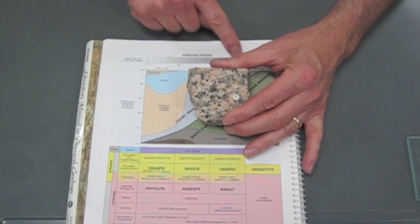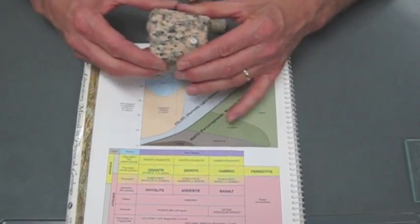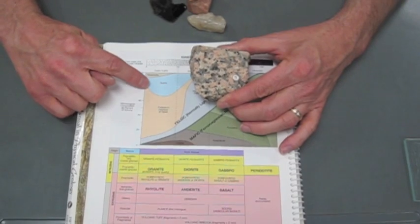As we look at the color scale, it's towards the lighter color. It's got a lot of potassium feldspar in it and some quartz.